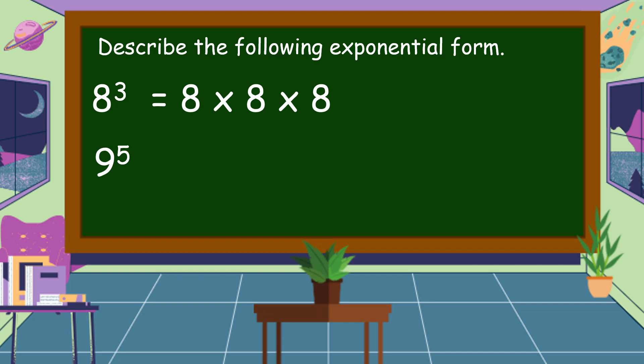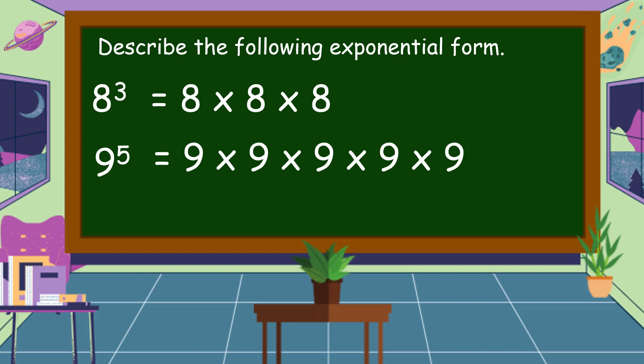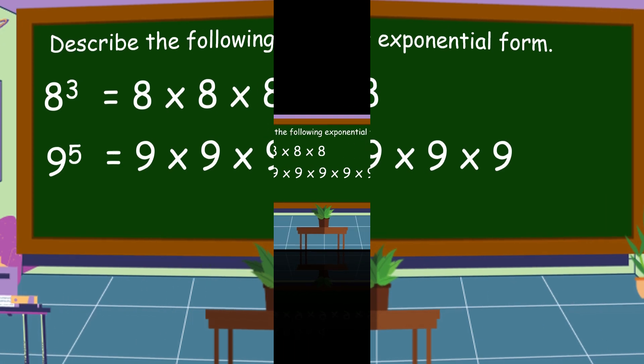Describe 9 raised to the power of 5. This means 9 times 9 times 9 times 9 times 9. Since the power is 5, we're going to multiply 9 five times by itself.